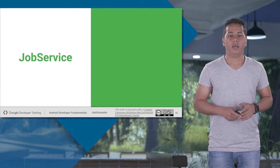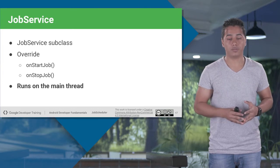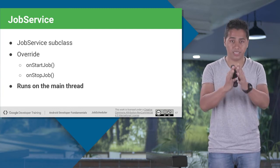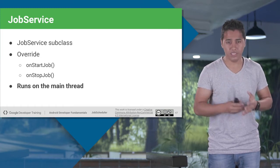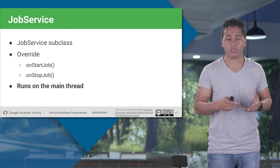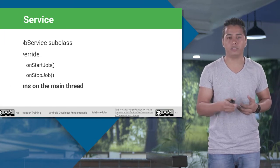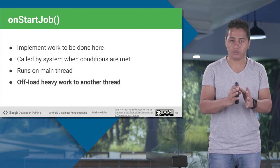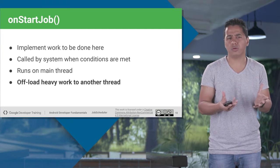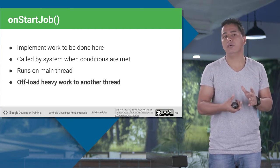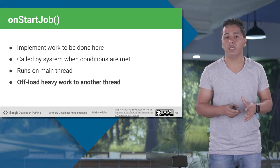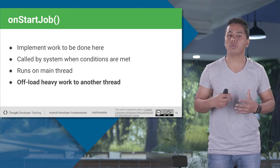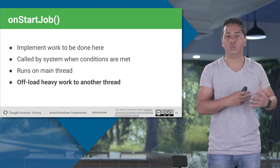Job Service: you are going to create a subclass of your JobService, then override two methods — OnStartJob and OnStopJob. Please note that your JobService class runs on your main thread only, just like your services. So if there are any long-running background processes, you have to put them in a background worker thread. OnStartJob implements what work is to be done. If it is work which doesn't take much time, you return false. If it does take too much time, you put that work in a background worker thread and return true, so the system knows you have offloaded heavy work to another thread.